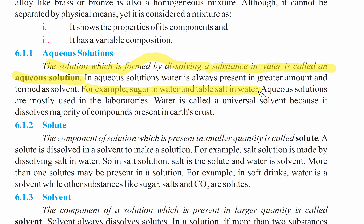After that, the term is solute — you already know this term, let's revise it. The component of a solution which is present in smaller quantity is called solute. Using the salt and water example: you added two spoons of salt in a little water — the quantity of salt was less, the quantity of water was more. So the one with less quantity is called solute — in general, that is the salt. Definition and one example: salt solution is made by dissolving salt in water; salt is the solute and water is the solvent.